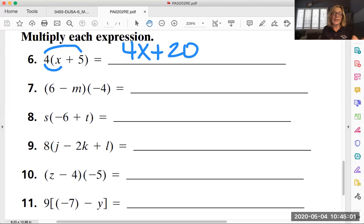So look at number seven. We have the quantity of six minus m times negative four. Now in this case negative four is after the group but that's okay. It can be either before or after. The concept is the same.